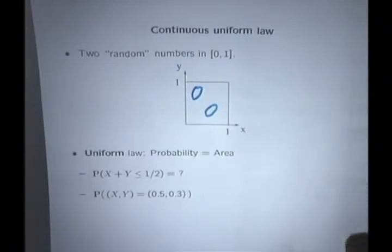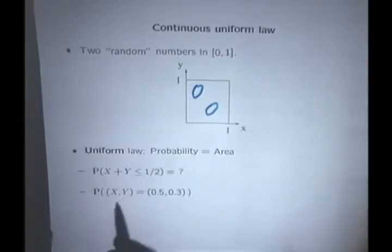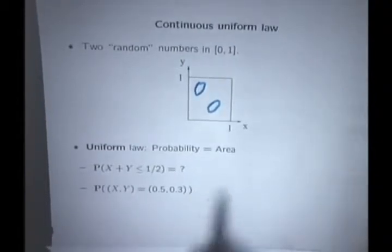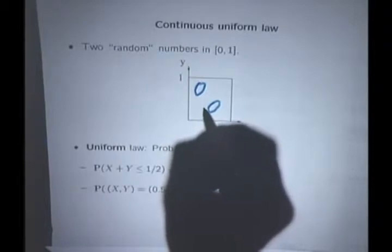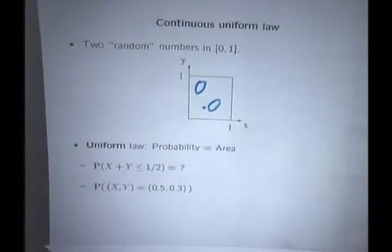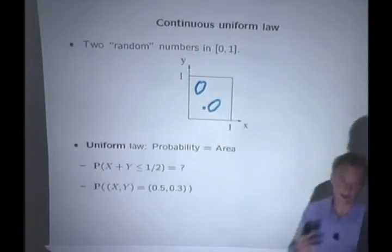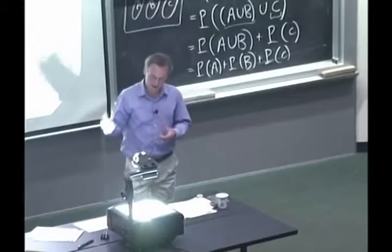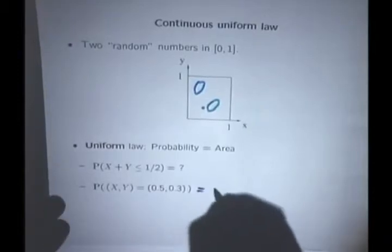We can now answer questions. Let's answer the easy one. What's the probability that the outcome is exactly this point? That, of course, is zero, because a single point has zero area. And since probability is equal to area, that's zero probability.